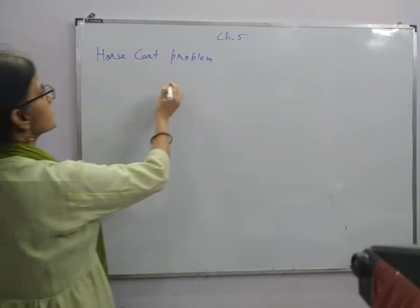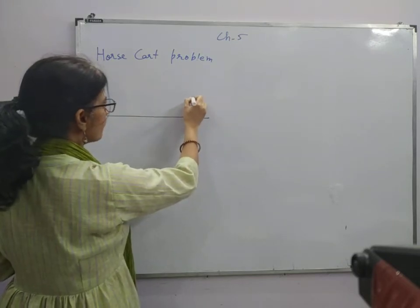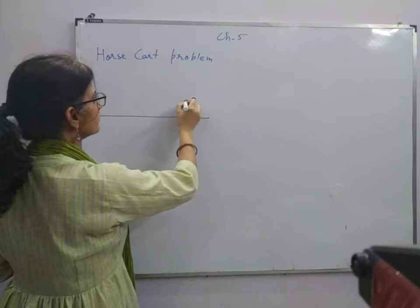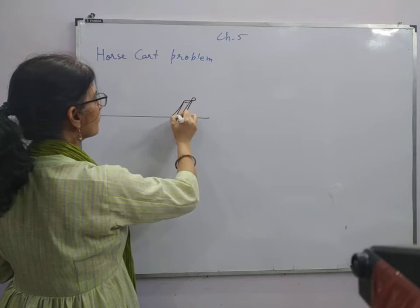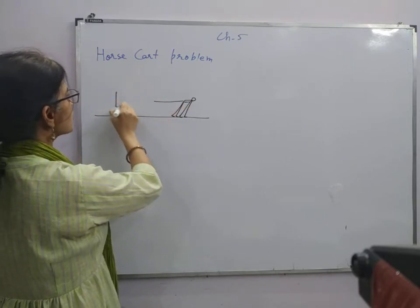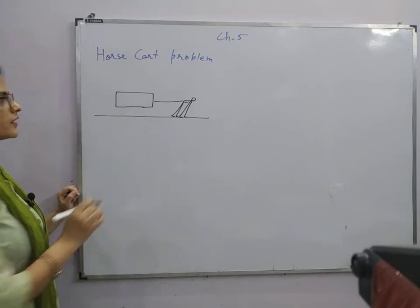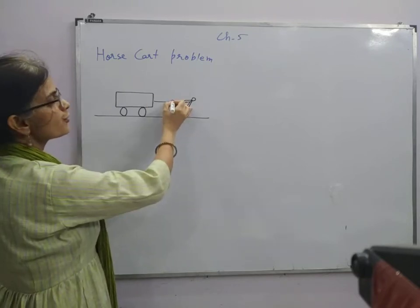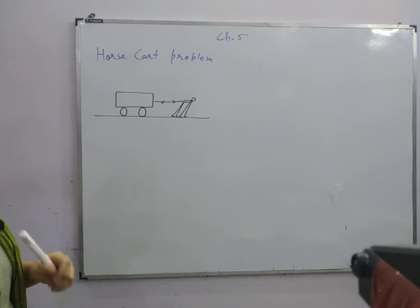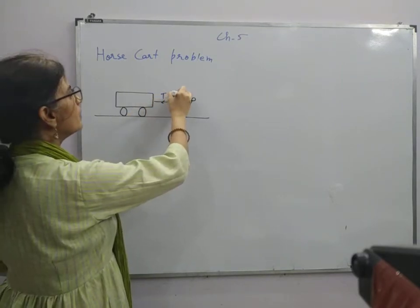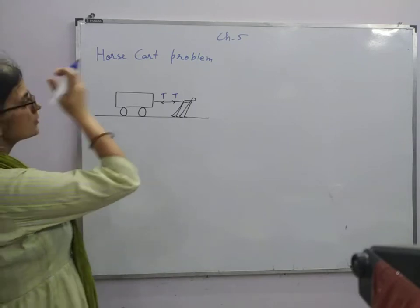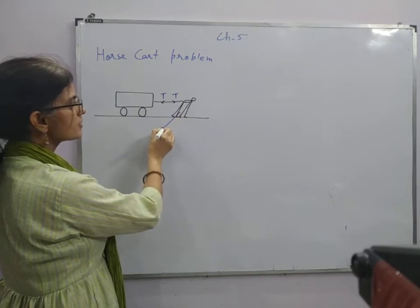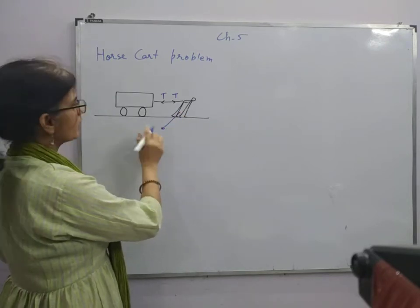Suppose our horse is pulling a cart, and this is attached to the cart like this. There is a force of tension between the horse and the cart, and the horse is exerting a force on the ground in oblique direction.